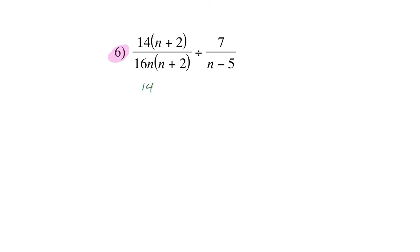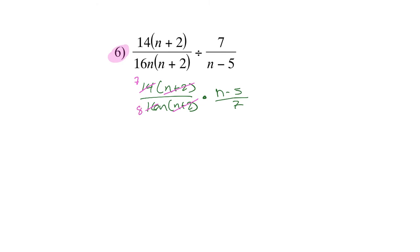Again, I'm going to keep the first fraction the same, change to multiplication, and flip the second fraction. I can simplify n plus 2, and I can simplify 14 and 16 by dividing by 2 — this becomes 7 and this becomes 8. Then the 7 cancels out. So at the end, I get n minus 5 divided by 8n — don't forget the n.